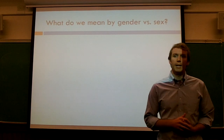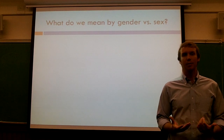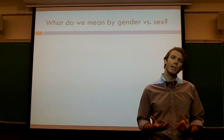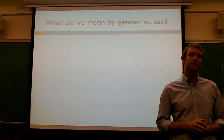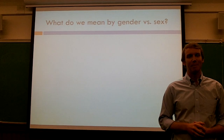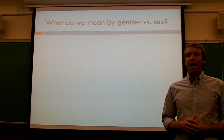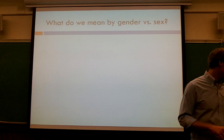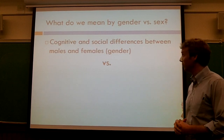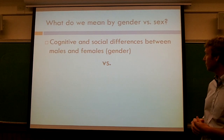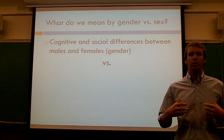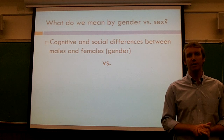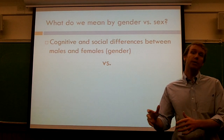Starting off, thinking about the words gender and sex — what comes up for people? What are some ideas about what these words mean, maybe starting with gender? One student suggests biology. Gender is actually not biology, but that is a common misconception — a lot of people think that gender does mean biology. Gender is specifically cognitive and social differences between males and females. It has to do with thoughts and social practices, ways of thinking about things that distinguish males from females.